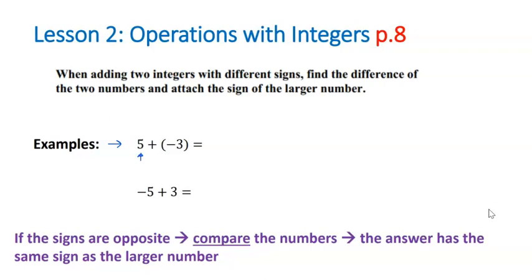5 is greater than 3, so because I have more positives, my answer is going to be positive. And then I just subtract. 5 minus 3 is 2. This is like having $5 and then going ahead and spending $3. We have $2 left.